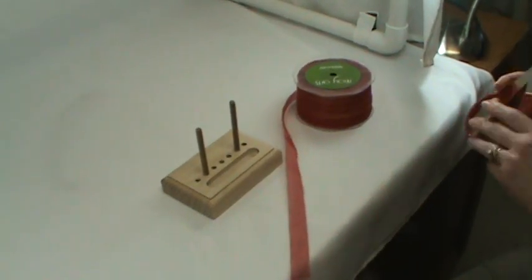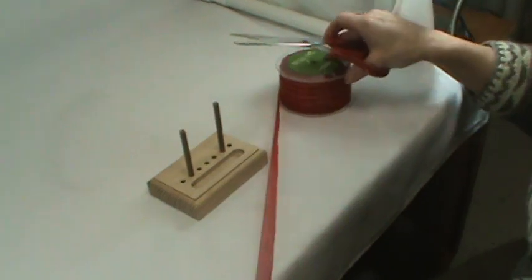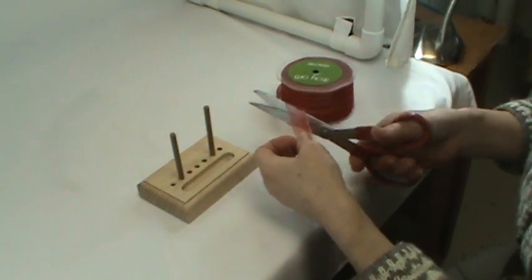We're going to cut a piece of ribbon, depending on the size bow you want, usually about 12 inches long.